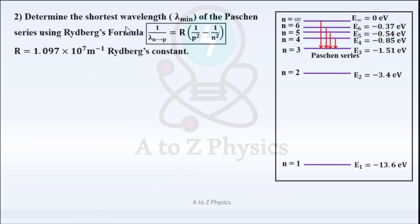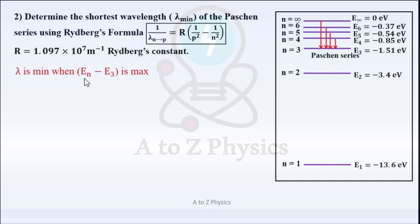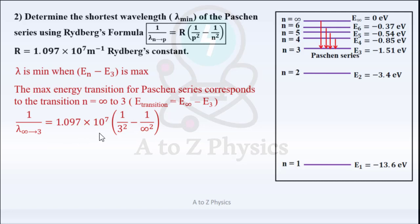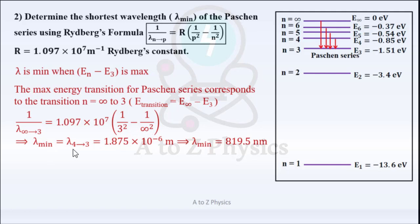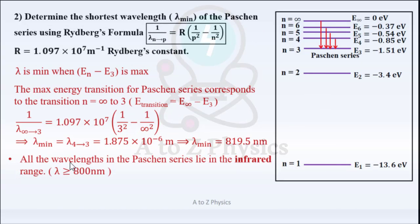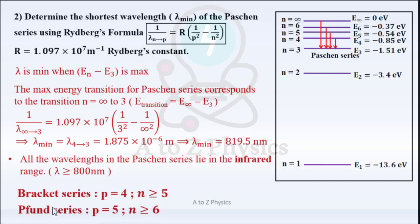Part 2: Determine the shortest wavelength λmin of the Paschen series using Rydberg's formula. Lambda is minimum when EN minus E3 is maximum. The maximum energy transition corresponds to the transition N = infinity to N = 3. 1/lambda = 1.097×10⁷ × (1/3² − 1/∞²). You will get λmin = 819.5 nm. Note that the wavelengths in the Paschen series lie in the infrared range. Brackett and Pfund series also lie in the infrared region.